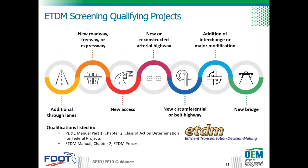FDOT uses the Efficient Transportation Decision Making or ETDM process to provide early identification of potential environmental considerations and transportation planning to streamline project delivery. Projects that qualify for ETDM screening include those that propose additional through lanes such as capacity improvement projects, new roadways, reconstructed arterial highways, the addition of interchange or major interchange modifications to a freeway or expressway, and new bridges. This list of qualifying projects is provided in Part 1, Chapter 2 of the PD&E manual and in the ETDM manual.